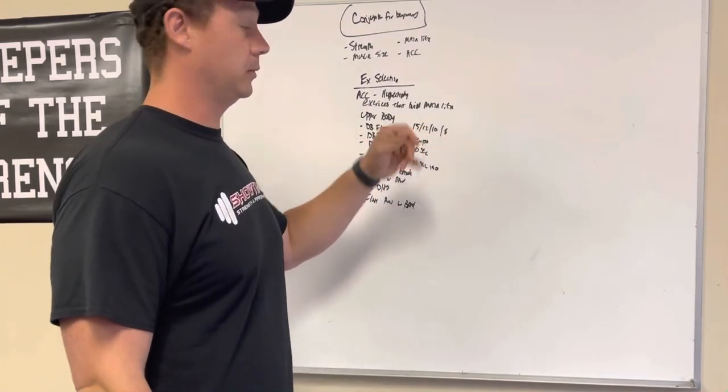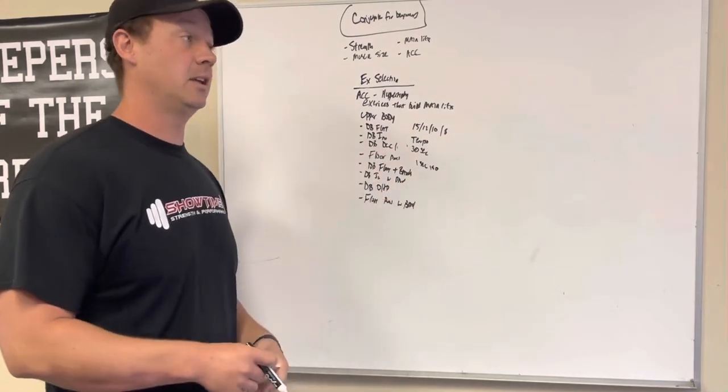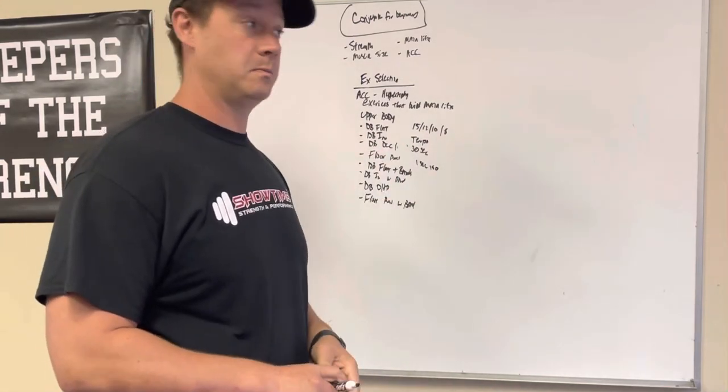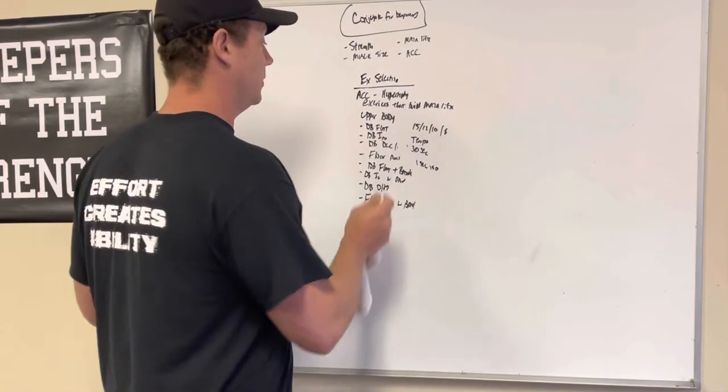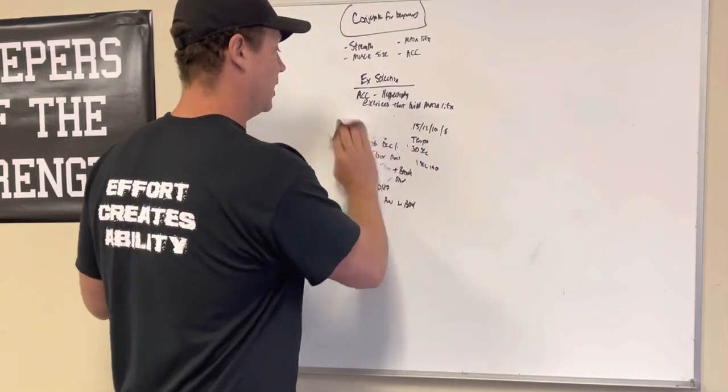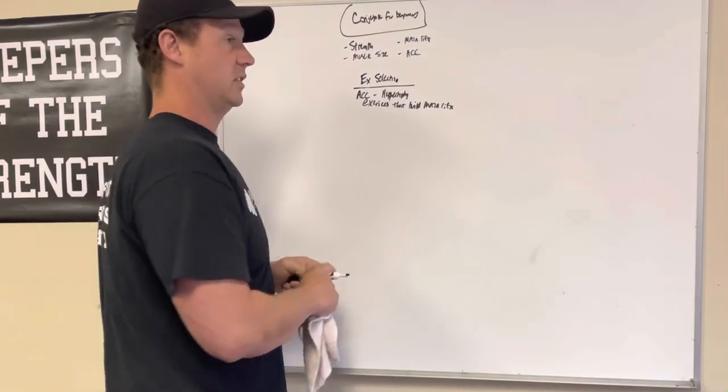Then, if you again, rotate through finding your top set of 15, top set of 12, top set of 10. Now, you're at about 20 to 25 weeks of dumbbell accessories. So again, just keeping it really basic. You don't have to reinvent the wheel on accessories.